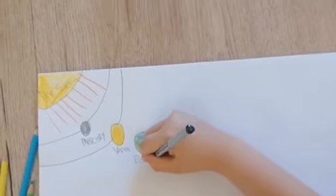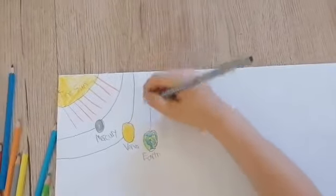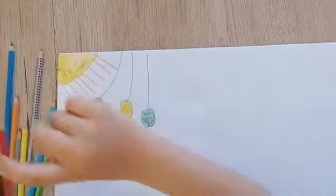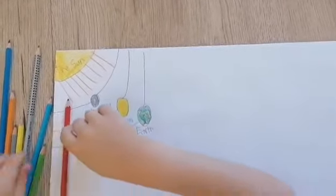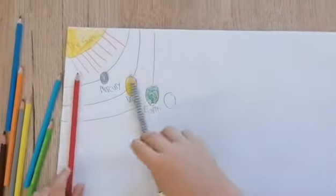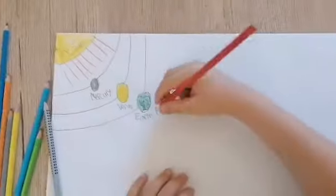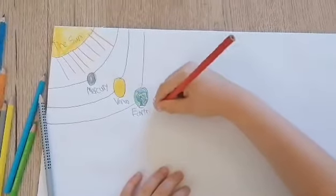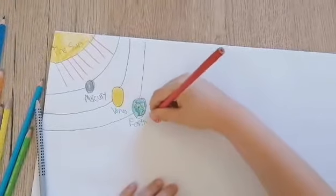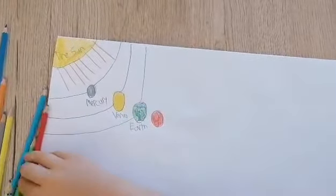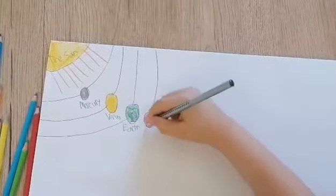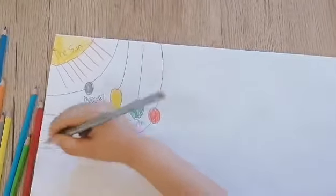Next we have Mars. Now Mars is the fourth planet from the Sun and is the second smallest. It's still cold there. Compared to Antarctica, its average temperature could reach down to negative 81 degrees Fahrenheit.